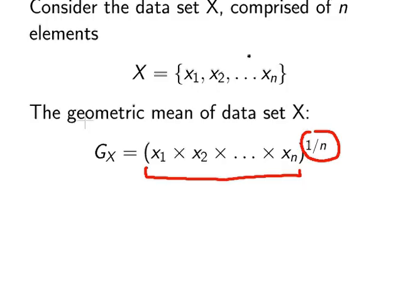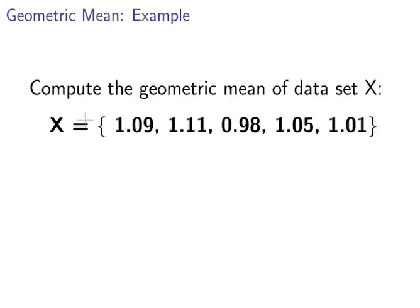Let's look at an example here. Compute the geometric mean of the data set X. Importantly, there are five elements here, so N equals 5, and 1 over N is 0.2.